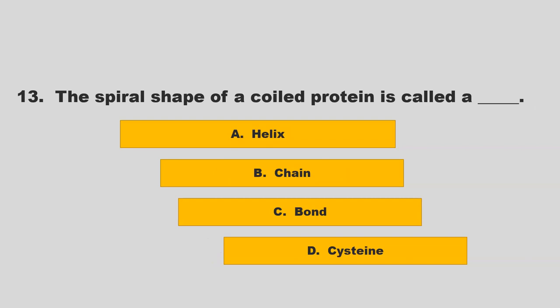The spiral shape of a coiled protein is called a blank. Is it helix, chain, bond, or cysteine? If you chose A, helix, you are correct.